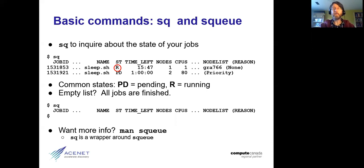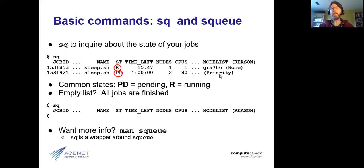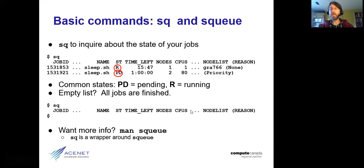The state will frequently show PD, which stands for pending — meaning it hasn't started yet and the scheduler is still trying to find a place for it. Over on the right-hand side it may show something like 'priority,' which is a coarse-grained reason for why it isn't running yet — maybe waiting because it hasn't reached high enough on the priority list, or the appropriate resources aren't available. If you run sq and get just headers and nothing else, that means all your jobs are finished — they may have succeeded or failed, but they're out of the system now.